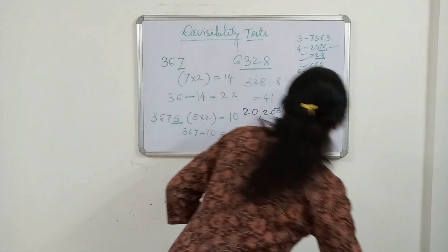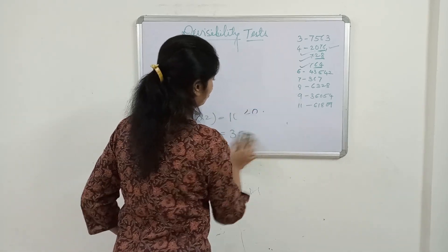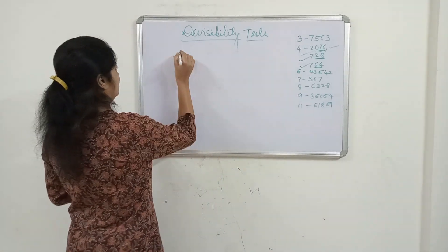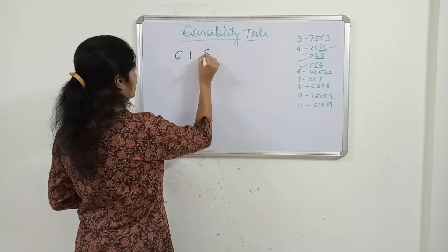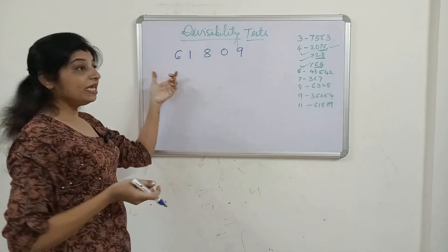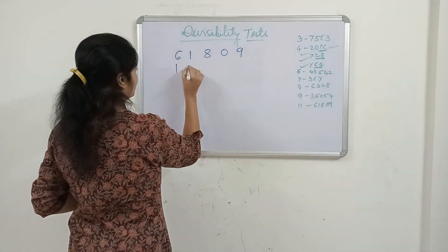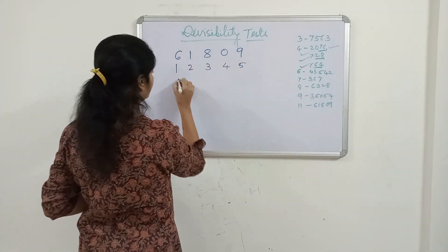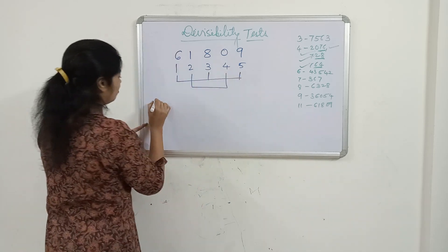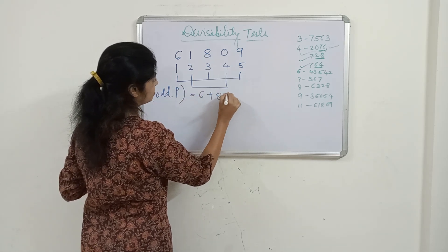For example, take the number 61,809. Number the places: positions 1, 2, 3, 4, and 5. Odd places are 1, 3, 5 and even places are 2, 4. Add the digits at odd places: 6 plus 8 plus 9 equals 23. Add the digits at even places: 1 plus 0 equals 1. Subtract: 23 minus 1 equals 22. Since 22 is a multiple of 11, the number 61,809 is divisible by 11.